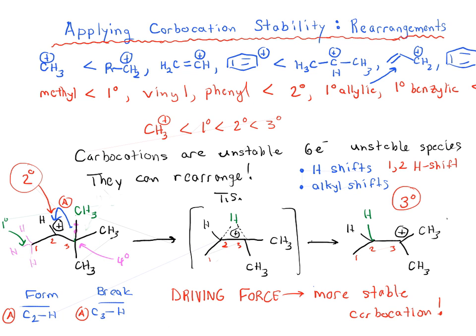This is another situation under which a carbocation can rearrange. Like the runners passing the baton, imagine the CH3 being swapped between carbon two and carbon three — we are forming C2–CH3 and breaking C3–CH3. This gives a tertiary carbocation as the final product. We've gone from secondary to tertiary, ending with a more stable carbocation. That's a basic overview of the two important rearrangement types: hydride shifts and alkyl shifts. The driving force is always moving from a less stable to a more stable carbocation.